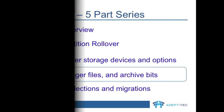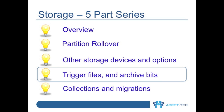Hello. I want to give you a quick demo today of the use of the archive bit, trigger file, and XML file to determine the completion of the backup of Enterprise Vault save sets. This is the fourth video in a five-part series of videos covering some of the different aspects of Enterprise Vault storage.